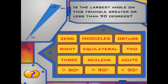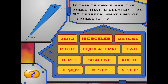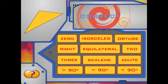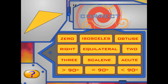Is the largest angle on this triangle greater or less than 90 degrees? The angles on the triangle are 10, 60, and 110 degrees. Right — it's more than 90 degrees. If this triangle has one angle that's greater than 90 degrees, what kind of triangle is it? An angle that is greater than 90 degrees is called an obtuse angle. Does this triangle have an obtuse angle? Good job — it's an obtuse triangle. How many sides of the triangle are equal in length? If all the sides are different lengths, what kind of triangle is it? Look at the scale of the triangle. Right — it's a scalene triangle.